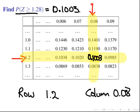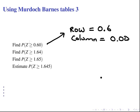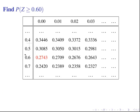Now let's try a few more of these. Use Murdoch Barnes to find the probability of z being greater than 0.60. Well 0.60 the row would be 0.6 and the column is simply going to be 0.00. Let's look at that one in the next slide. The row 0.6 and the first column is the 0.00 column. So the answer we are looking for is 0.2743.